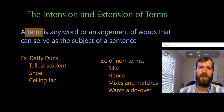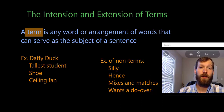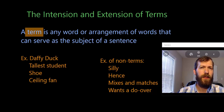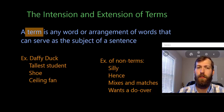In the last video, we talked about the difference between cognitive meaning and emotive meaning. Cognitive meaning is the informational content that can be true or false in a statement. Emotive meaning refers to the positive or negative feelings we might associate with certain words and terms — the emotions they elicit or express.